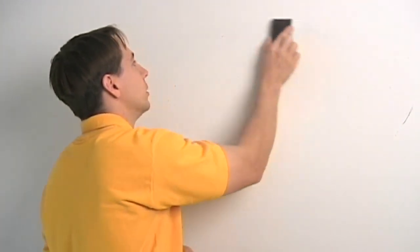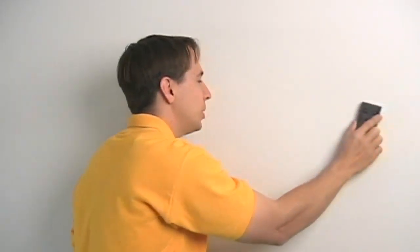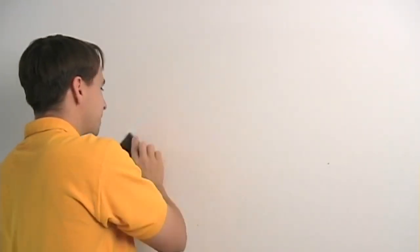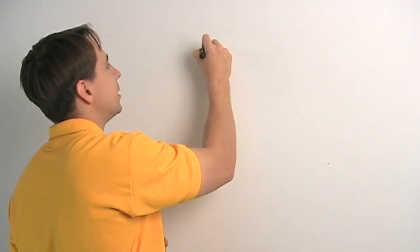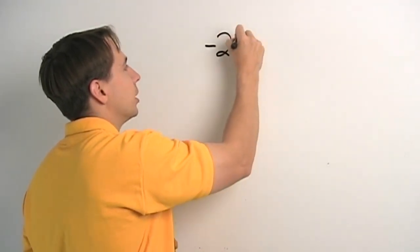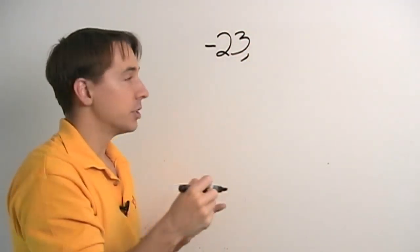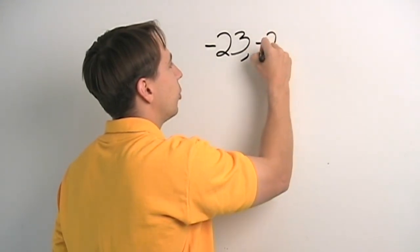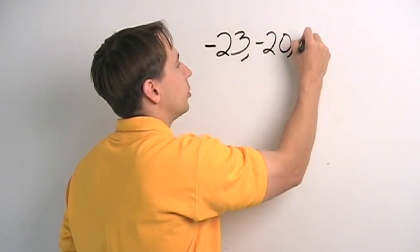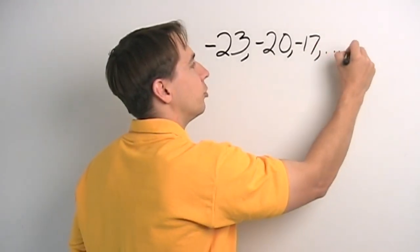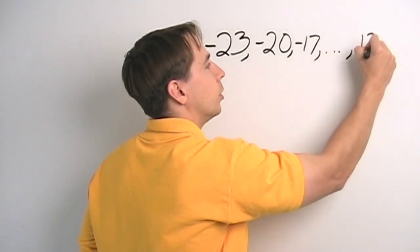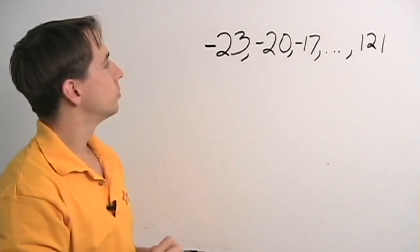This time we're going to count by 3's. And while I like to be a positive, upbeat kind of guy, sometimes I have to go negative. And that's what we're going to do here. We're going to start off with negative 23. And we're going to go up by 3 each time. So, the first step will take us up to negative 20. The next one up to negative 17. And so, we just keep on going. And we stop at 121.